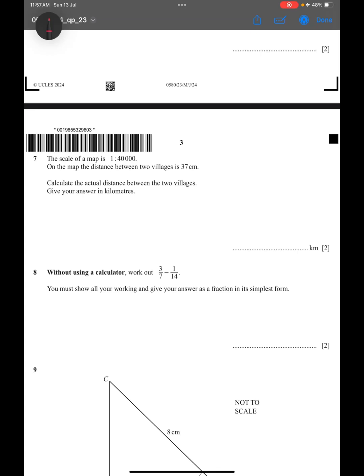The question is: the scale of the map is 1 to 40,000. On the map, the distance between the two villages is 37 centimeters. Find the actual distance between the two villages. Give your answer in kilometers.